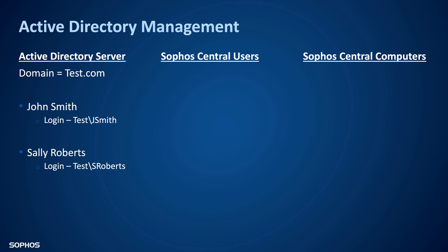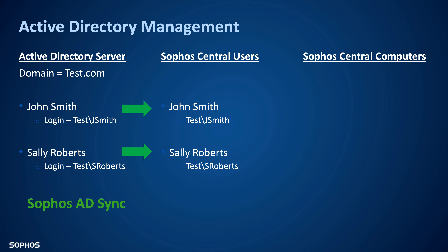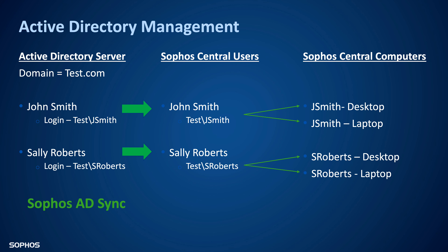We're going to start with Active Directory management. On the left, I have my Active Directory server. My domain is test.com and I have my two users, John Smith and Sally Roberts. We're going to install the Sophos AD Sync tool on the Active Directory server, which is going to synchronize John Smith and Sally Roberts into Sophos Central users. It is going to populate their usernames, both first and last name, as well as their associated logon ID — in this case, domain slash username. If John Smith and Sally Roberts both have two devices and they log on to those devices, it is going to associate both users to that same account. The end result is going to be two Sophos Central user licenses.